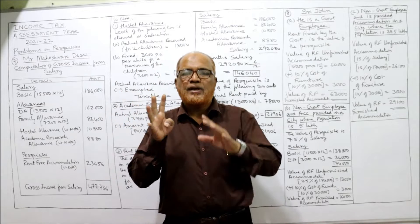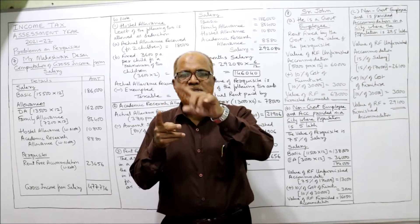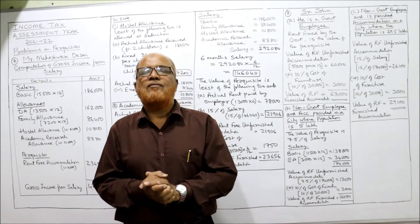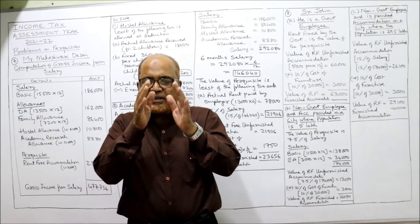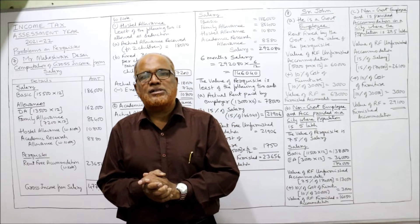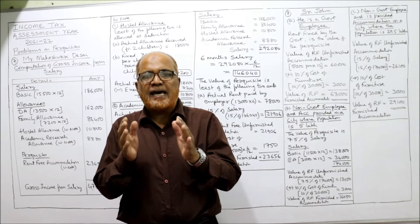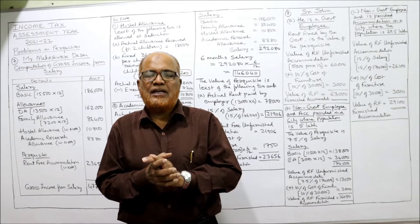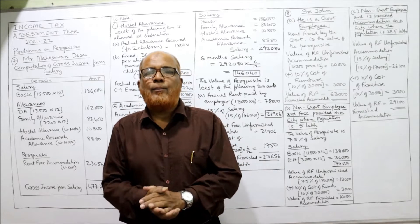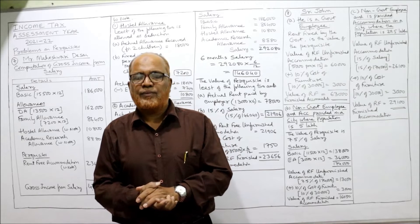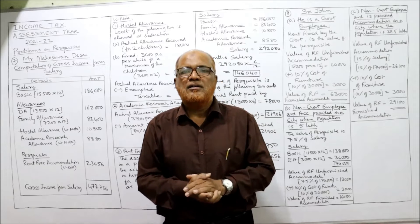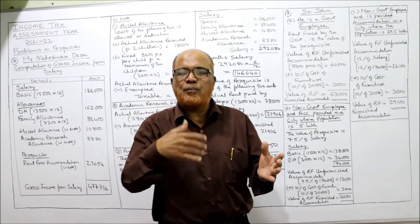Remember, the components of salary are four: salary, allowances, perquisites, and profitability of salary. The total of these four is called gross income from salary. Among these four, the more important and difficult point is perquisite — any kind of benefit either in cash or in kind given by the employer to the employee or their family members.